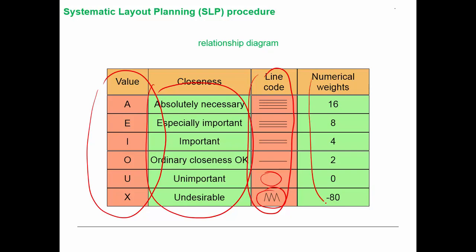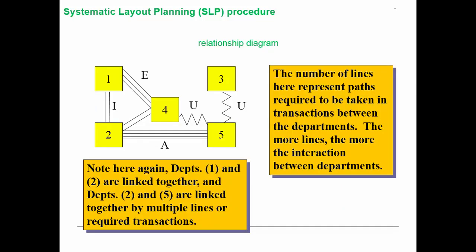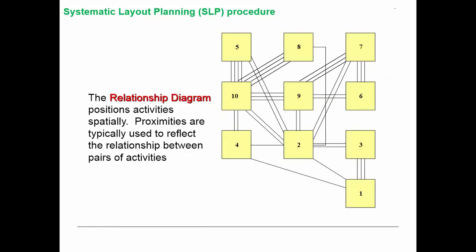Here is a relationship diagram example. The number of lines represents the required interaction between departments — the more lines, the more interaction. For example, the relationship between departments two and five represents a lot of interaction, while another line represents that those two departments cannot be close together. The relationship diagram positions activities spatially, and proximities reflect the relationship between pairs of activities.